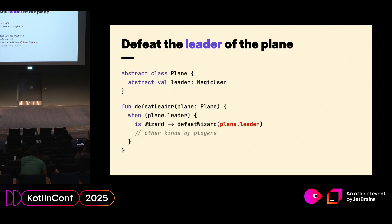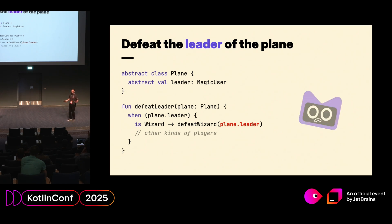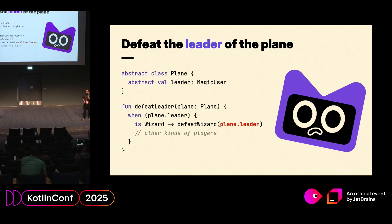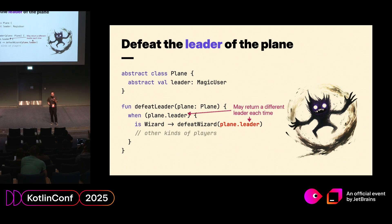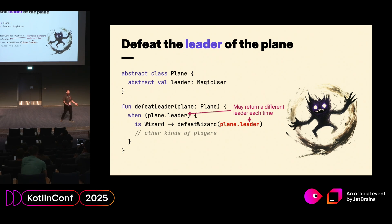We just need to defeat the leader of the plane — we read what is the leader of the plane and then apply a different method, a visitor pattern where we defeat the wizard. But that's red code. Why does the compiler say this is red code? At this point, we don't know that the leader of the plane is actually a wizard — we have just checked once. The problem is unstable vortices: you can actually write an implementation of this plane interface where it's almost always a sorcerer but one out of a hundred times it returns a wizard. The compiler cannot be sure, because maybe it was a sorcerer the first time, but when it tries to read the variable again, it's a sorcerer. So smart casting shouldn't proceed — it is not safe to do this.